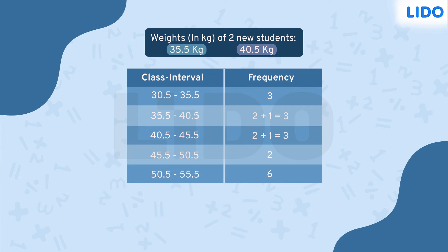Remember that when the number coincides with the limits of two class intervals, we choose the interval in which the number is the lower class limit. That way, 35.5 goes in the second row and 40.5 goes in the third row.